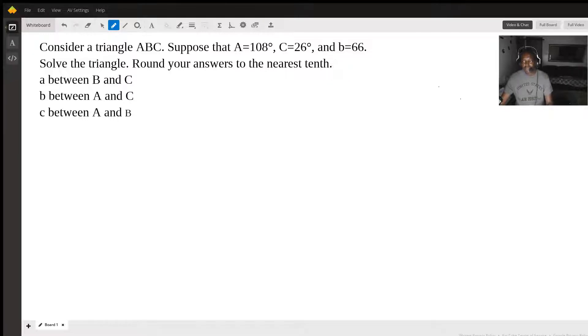Hi, this is Sammy W and we're going to solve the following problem today. Consider triangle ABC. Suppose that angle A is 108 degrees, angle C is 26 degrees, and side B is 66.